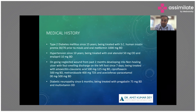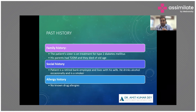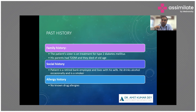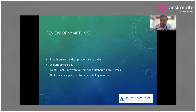In the past history, the patient's sister is on treatment for diabetes — diabetes runs in the family — and parents died of old age with diabetes. The patient is a retired bank employee living with his wife; he drinks alcohol occasionally and is a smoker. The smoking history is very important as it exposes the patient to risk of coronary artery disease and peripheral artery disease. Being a retired bank employee suggests a sedentary lifestyle, and looking at his foot ulcers and neuropathy, he has definitely been ignoring his diabetes for some time. No known drug allergies.